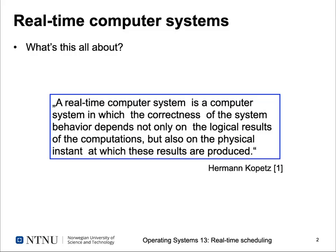So, what's a real-time computer system? This can be defined as follows by Hermann Kopetz, one of the earliest researchers doing intensive work in formal analysis of real-time systems. Kopetz defines a real-time system as follows: a real-time computer system is a computer system in which the correctness of the system behavior depends not only on the logical results of the computations, but also on the physical instant at which these results are produced.